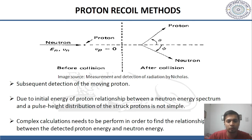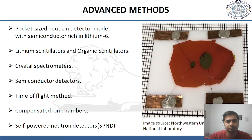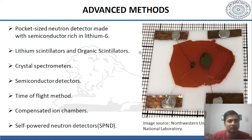There are also some advanced methods, such as a pocket-size neutron detector made with semiconductors rich in lithium cells, as shown here. Other advanced methods include lithium scintillators, organic spectrometers, crystal spectrometers, semiconductor detectors, detectors using time-of-flight methods, compensated ion chambers, and self-powered neutron detectors, also known as SPNDs.